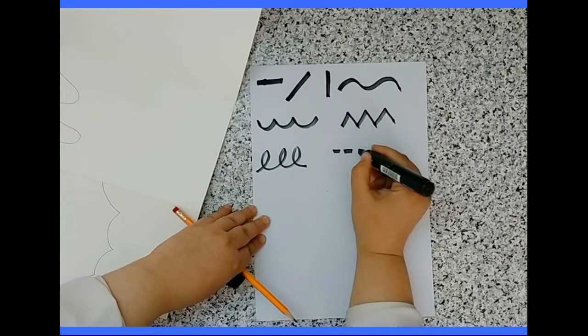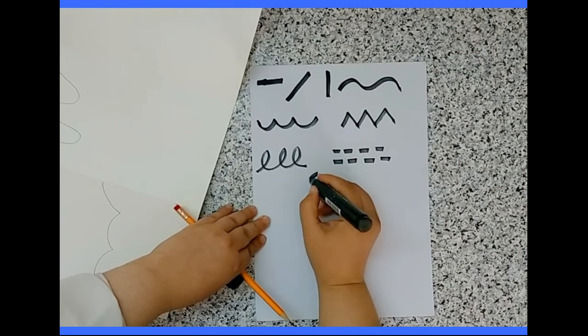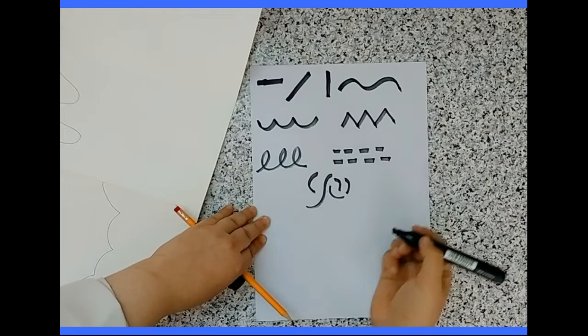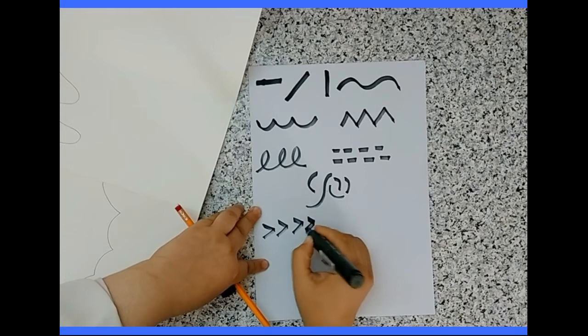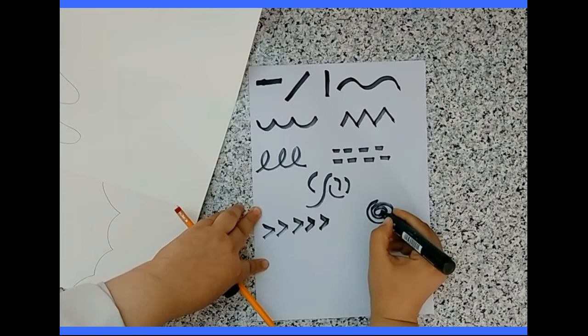You can do curved lines, dotted lines, broken lines. You can also do a chevron, spirals, crisscrosses. There are so many different varieties to choose from and to experiment with.